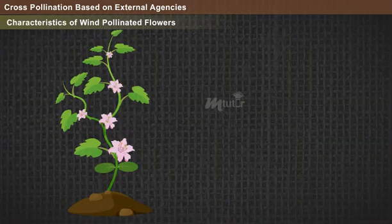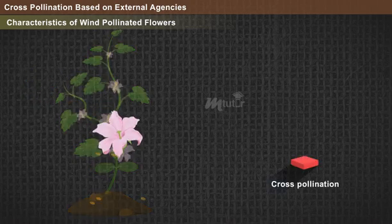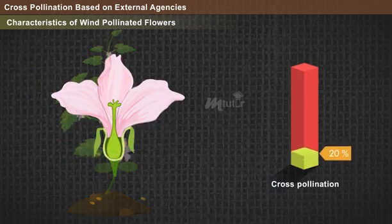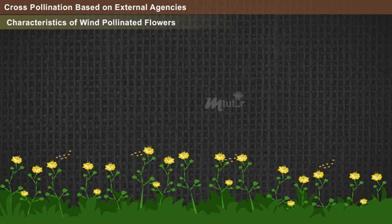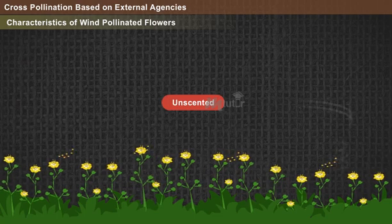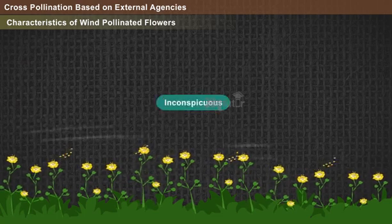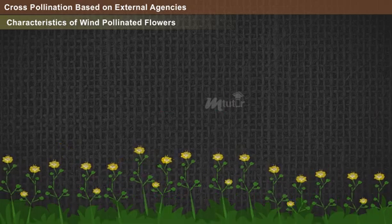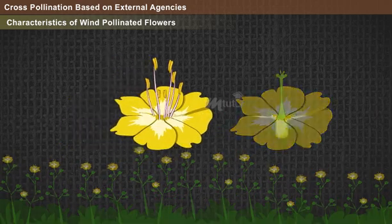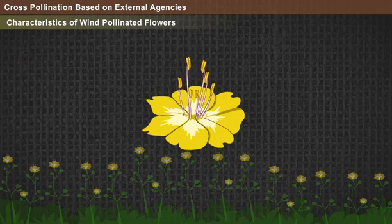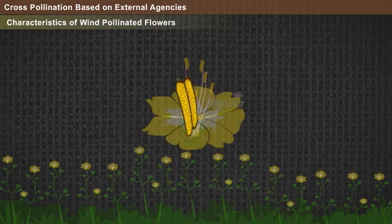Characteristics of wind-pollinated flowers: approximately 20% of cross-pollination occurs through the wind. The flowers of wind-pollinated plants are unscented, drab, small, and inconspicuous. The anther and stigma of these flowers project outwards for easy exposure to wind. The male flowers produce huge quantities of pollen owing to the wastage caused by wind.